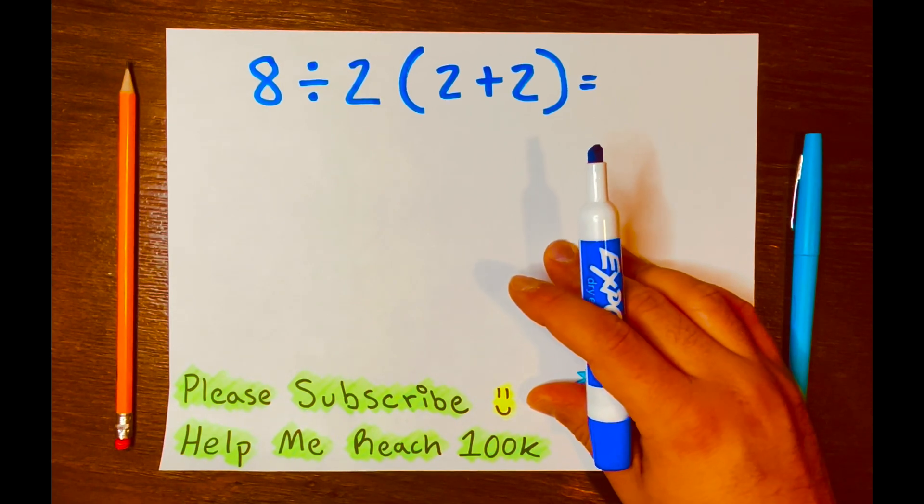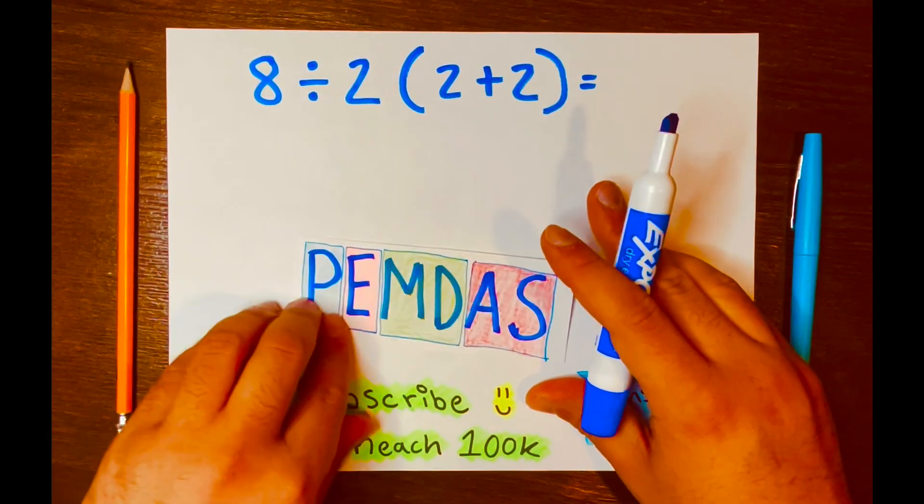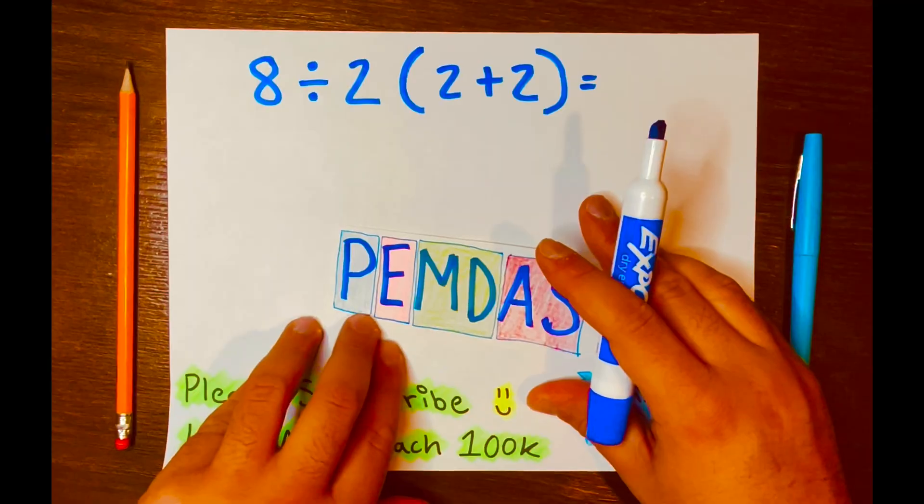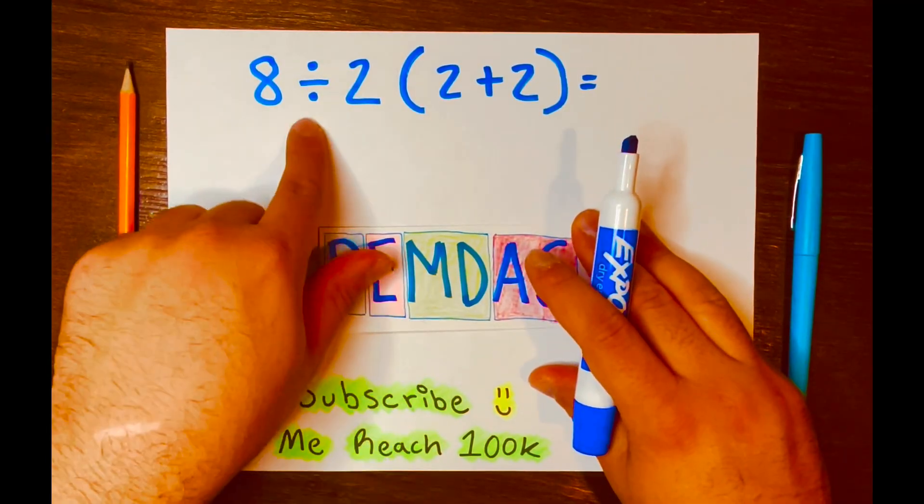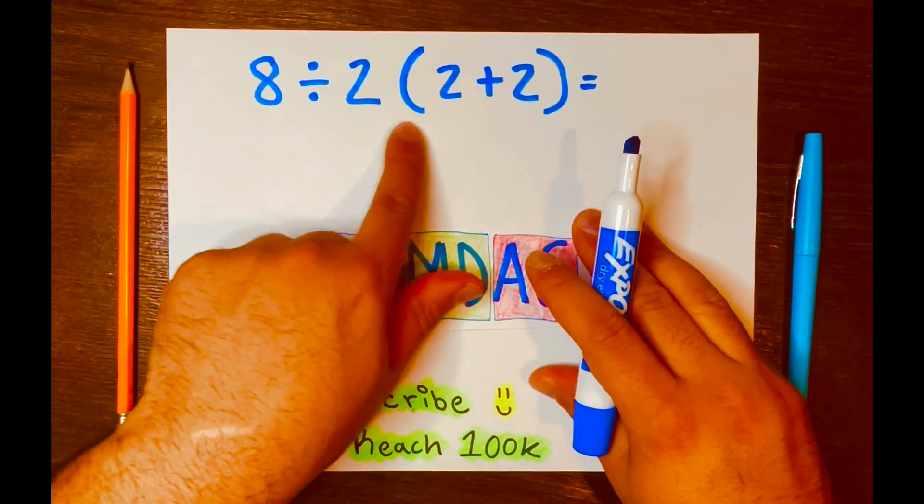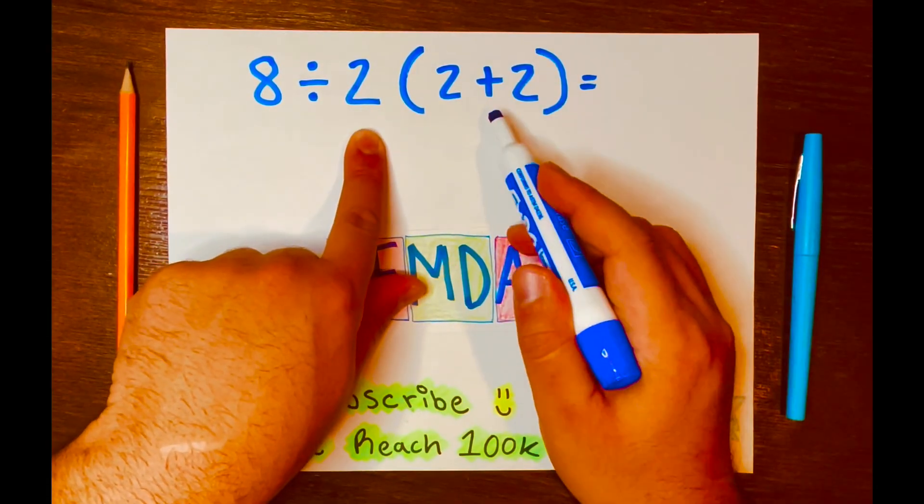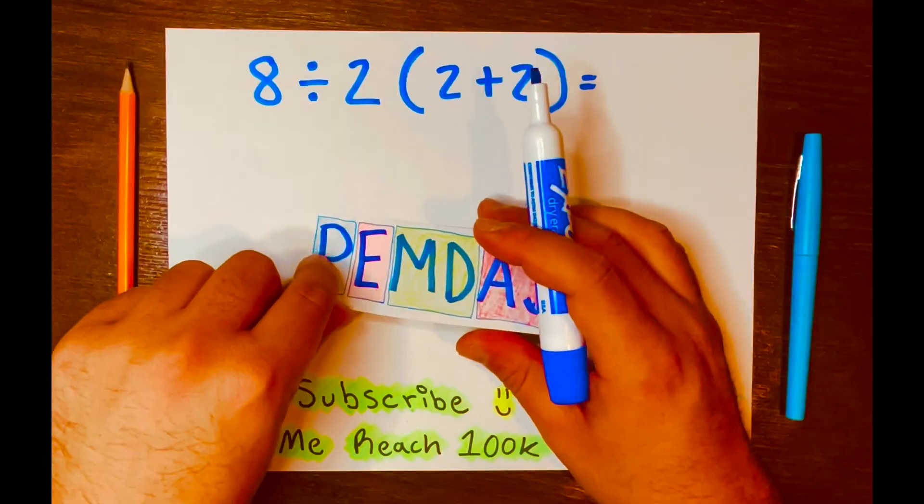And to solve this math problem, we're going to need the help of PEMDAS. And PEMDAS is just an acronym that will help us remember the order of operations. Now, I do see division. I do see multiplication. I do see addition. So let's go ahead and use PEMDAS.